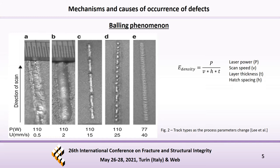Another reason for the formation of defects in AM components is the balling phenomenon. Likewise the keyhole mode, this is due to the variation of laser power and scan speed. As shown in the first figure, during the passage of the laser power over the powder bed, the metal powder is locally melted on a straight path. But when the two parameters are not optimized, the fused line begins to break up because of lesser surface tension, as shown in figures C, D, and E. The balling phenomenon happens when the energy density is not strong enough — in other words, when laser power is low and scan speed is high.